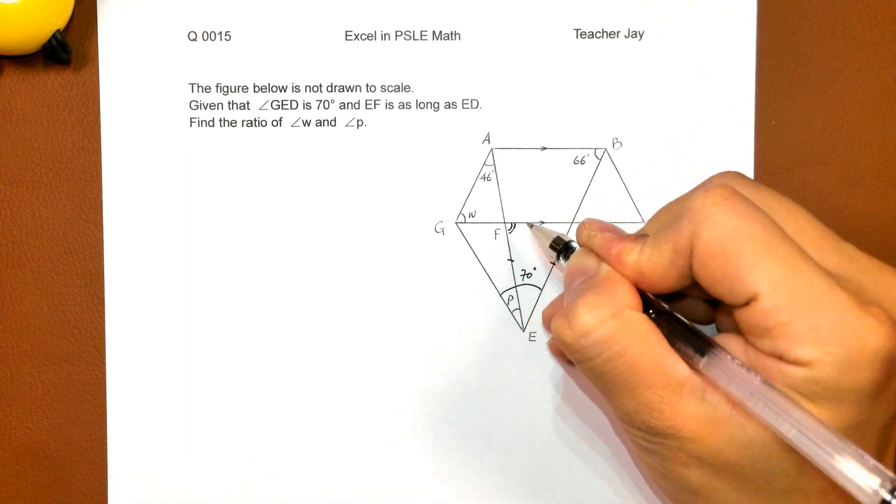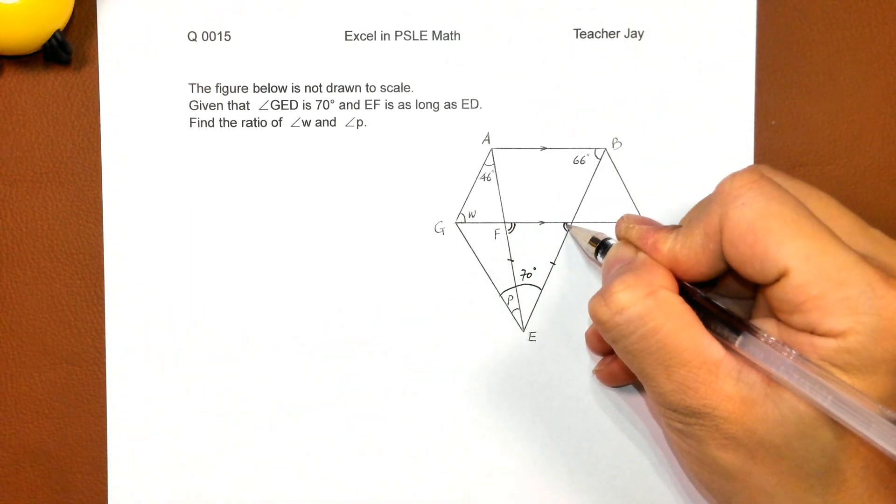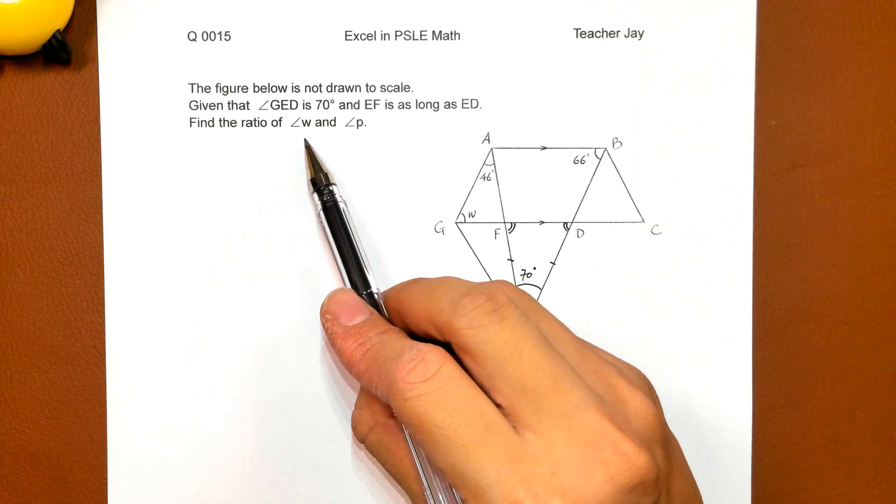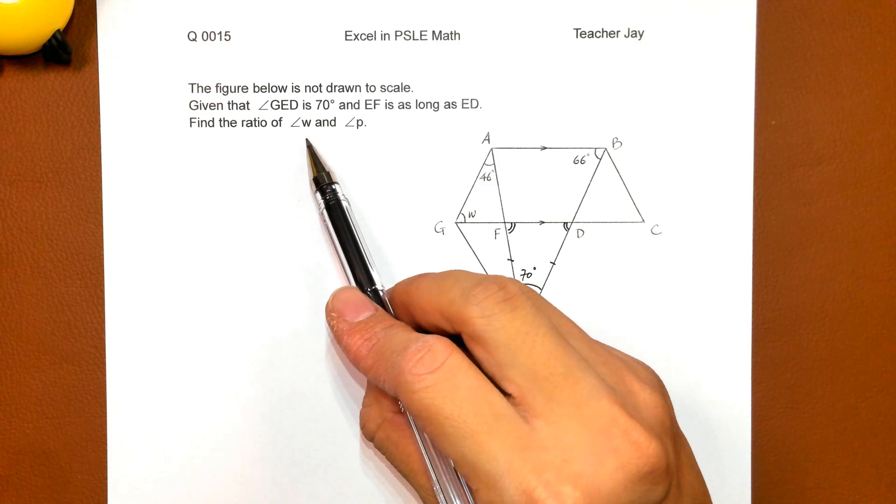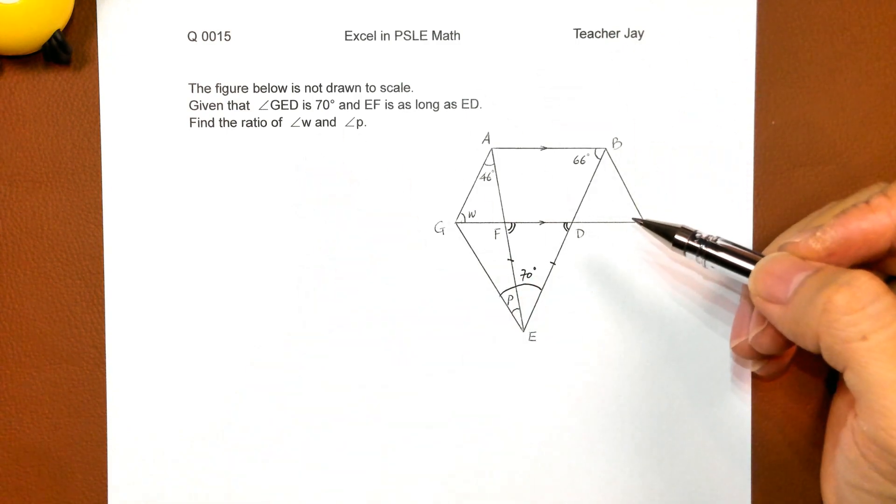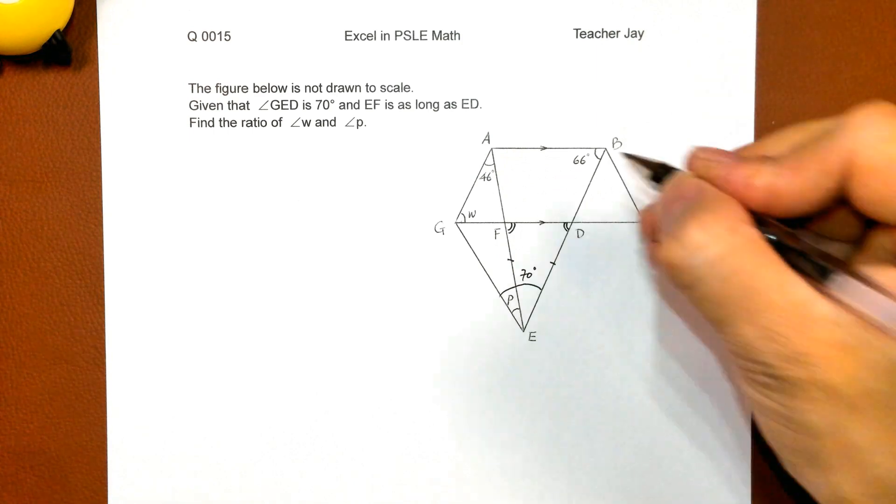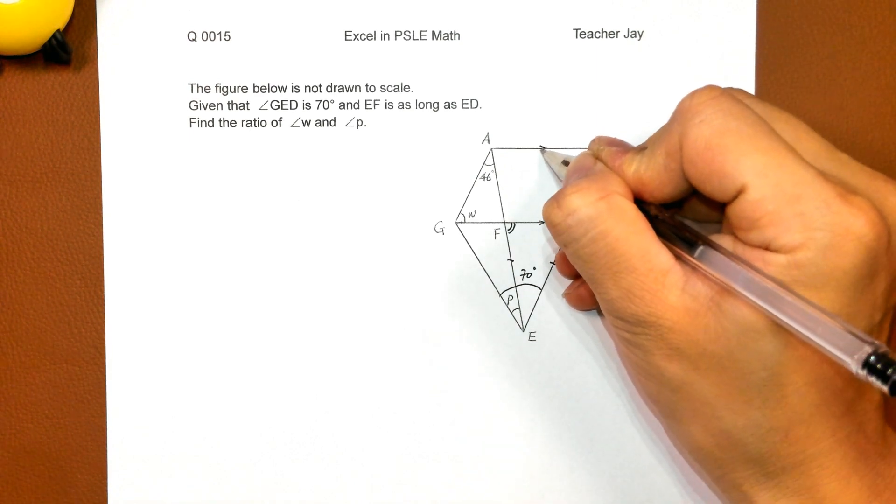So these two angles are equal. Now find the ratio of angle W, angle W here, and angle P. Here we got two arrows here.